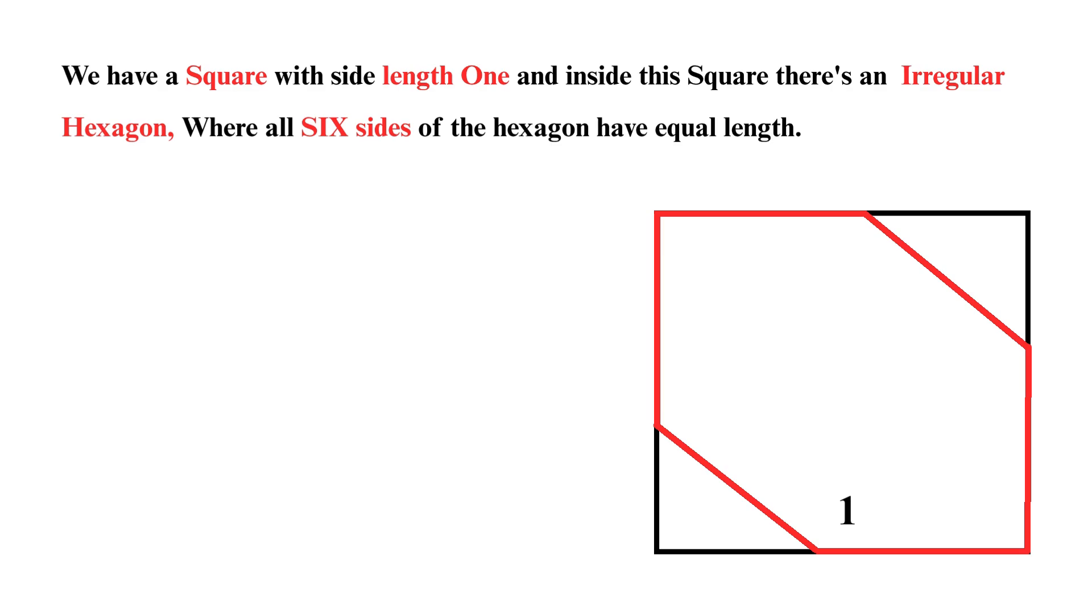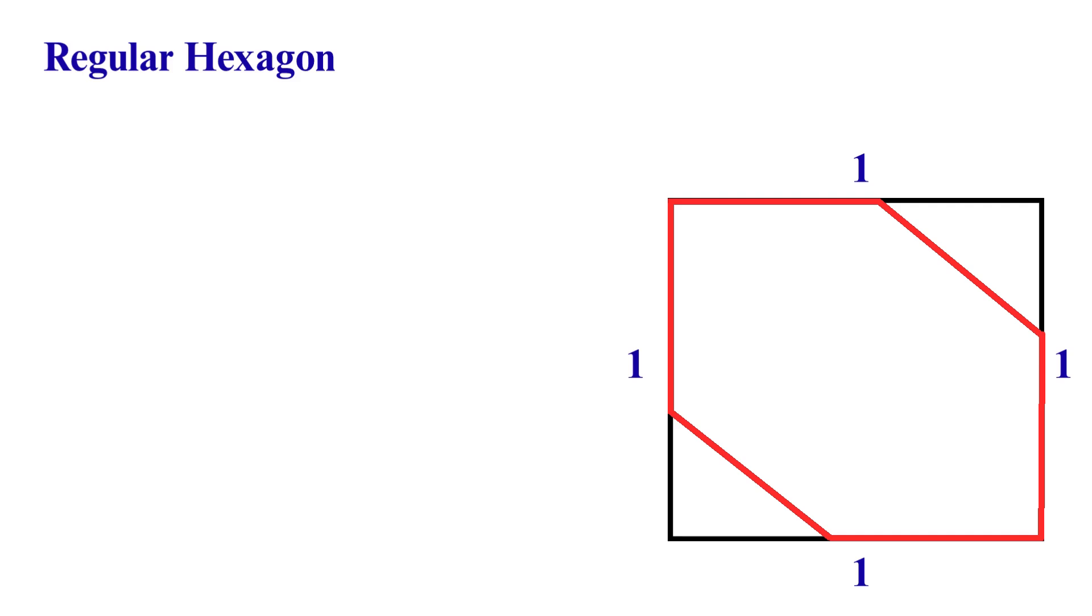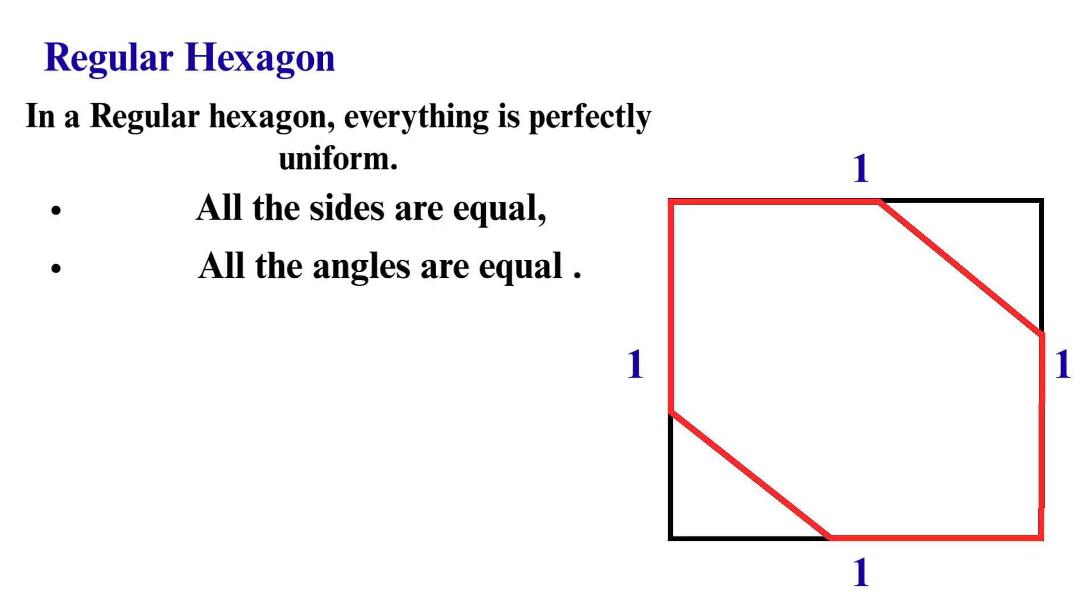Let's dive in to find it. First of all, let me draw the square first. Each side of the square has length 1. Now, let's draw a hexagon inside the square. Here's something important to understand. In the question, we are given that this is an irregular hexagon. Do you know what does that mean? Well, in a regular hexagon, everything is perfectly uniform. All the sides are equal, and all the angles are equal too. It's perfectly symmetrical, but an irregular hexagon, it is different. The angles can be of different sizes. They don't all have to match.